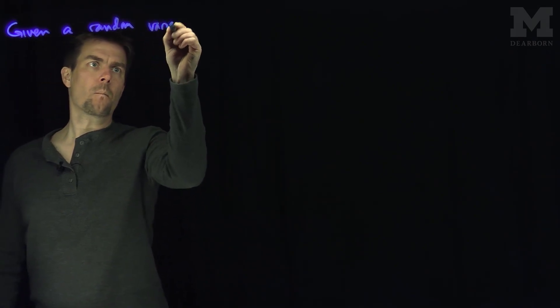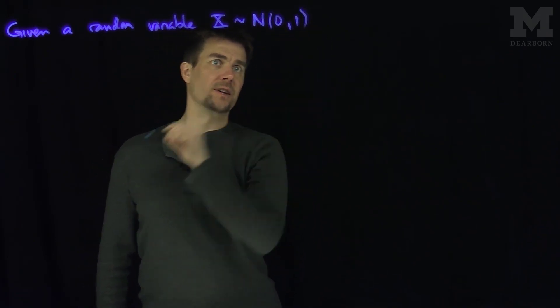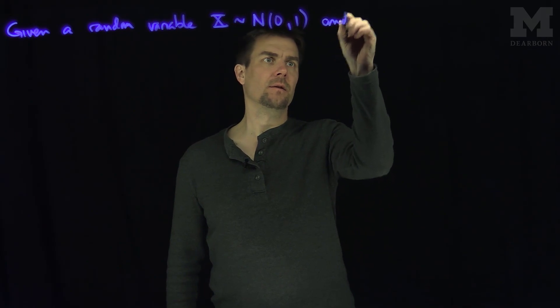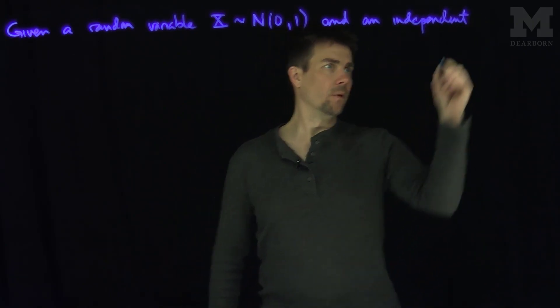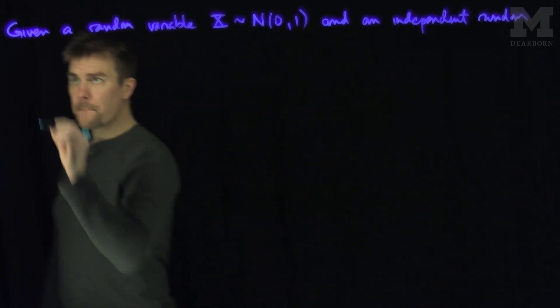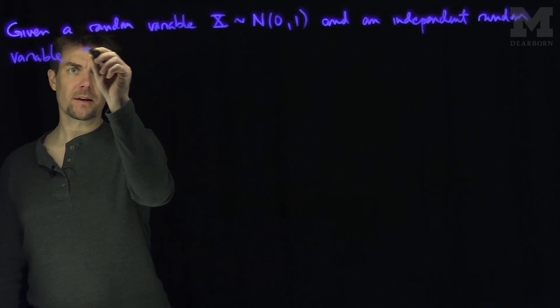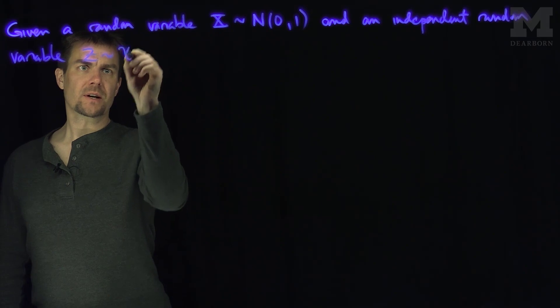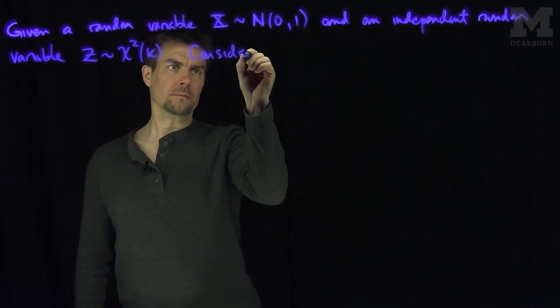Hello students, in this video we'll discuss the Student T distribution. If we have a random variable x which is normally distributed with mean 0 and standard deviation 1, and an independent random variable z which is chi-squared with k degrees of freedom, then we consider the quotient.